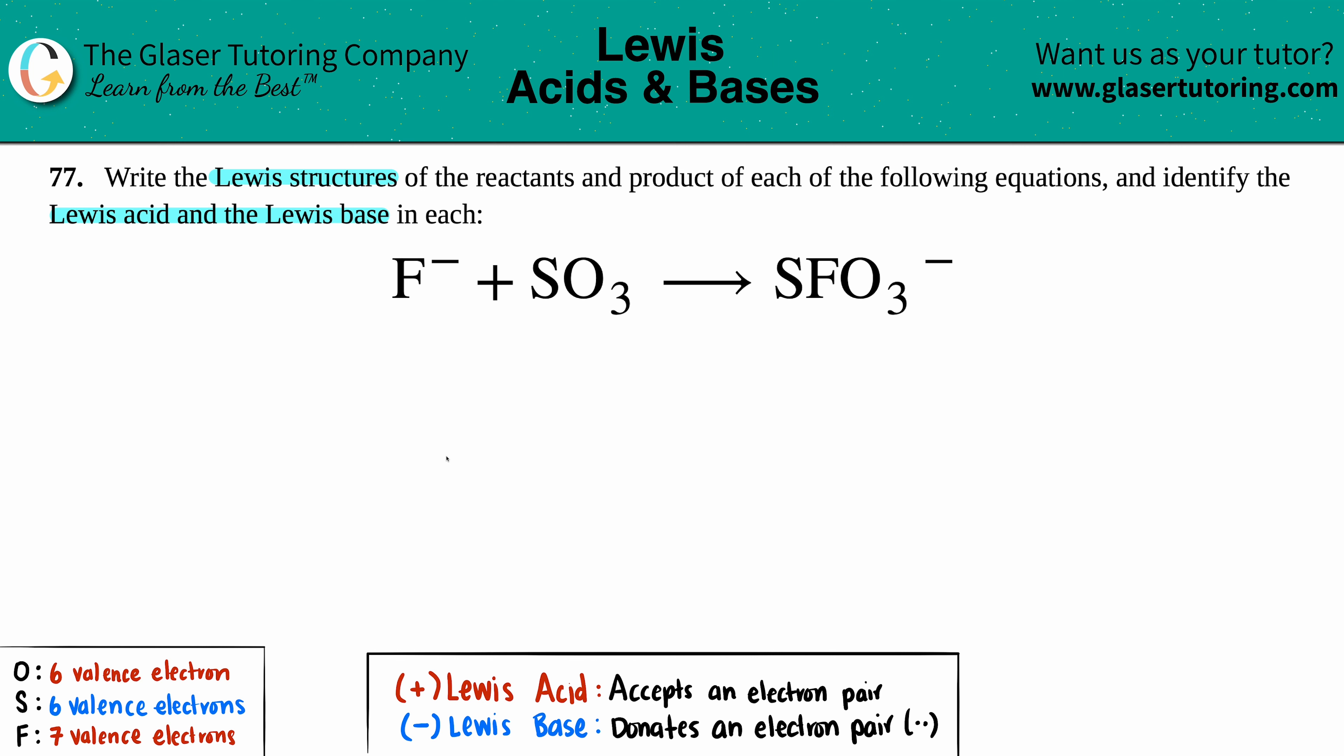You can always check back to that chapter—I believe it's chapter seven—but we have a playlist if you go back to the channel and search for that playlist. So that's going to be a review. The only thing that's new here is just looking at those Lewis structures and identifying which one is the Lewis acid or the base. I just wrote down here as a guideline the number of valence electrons that each element has in this reaction.